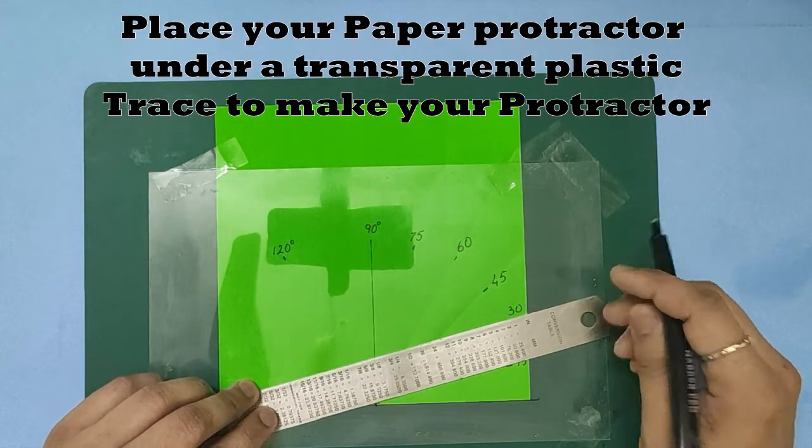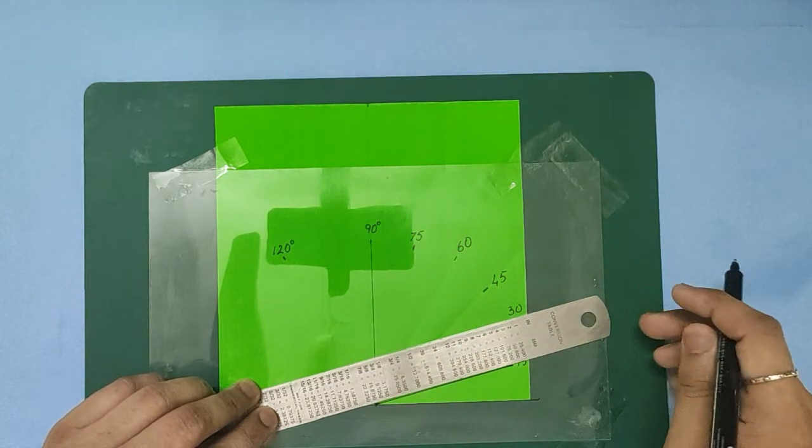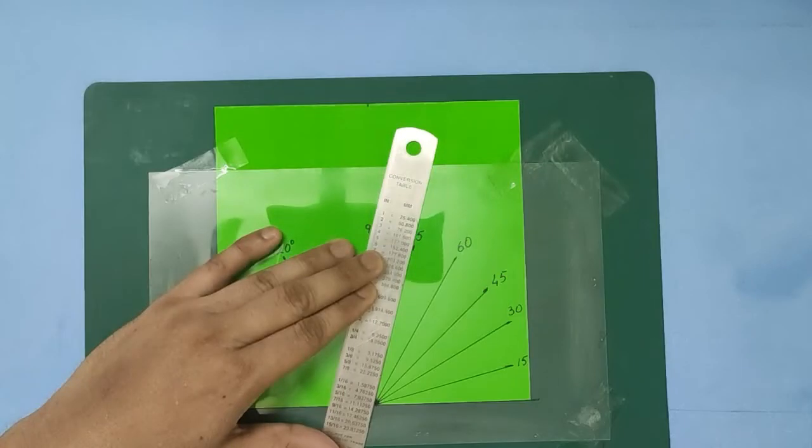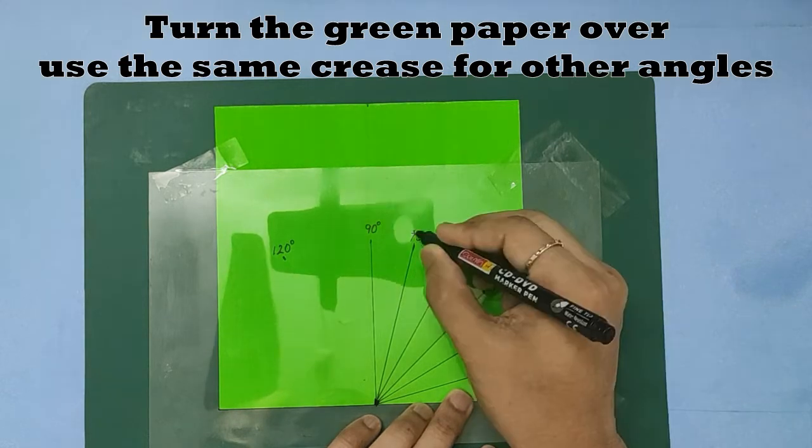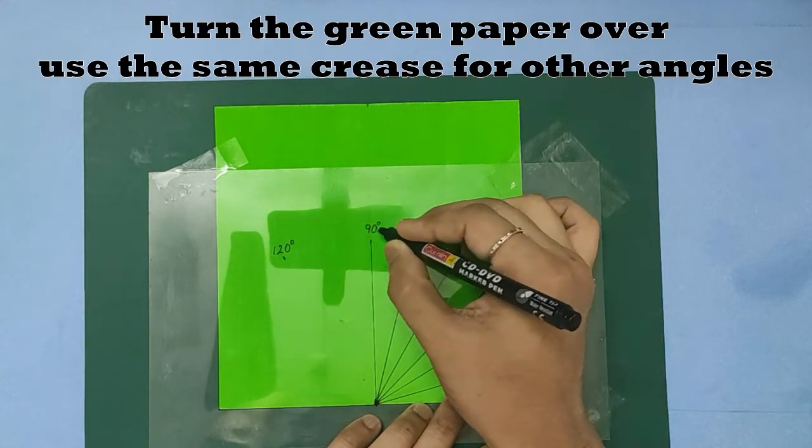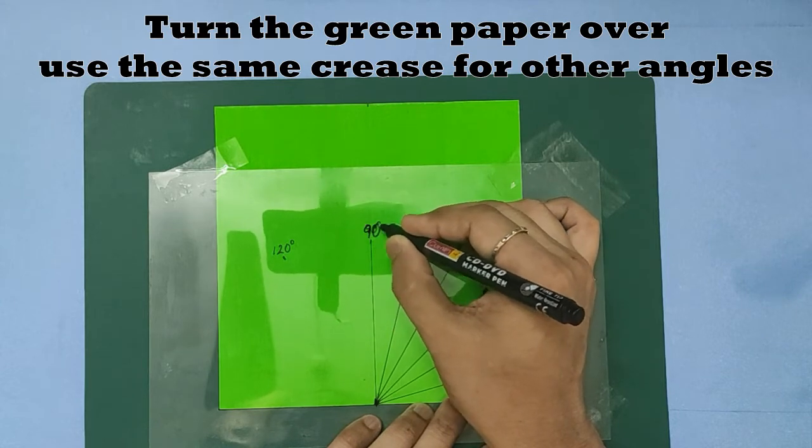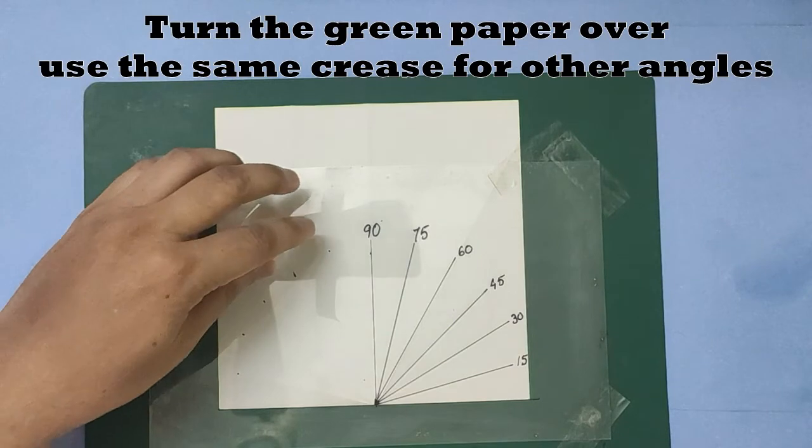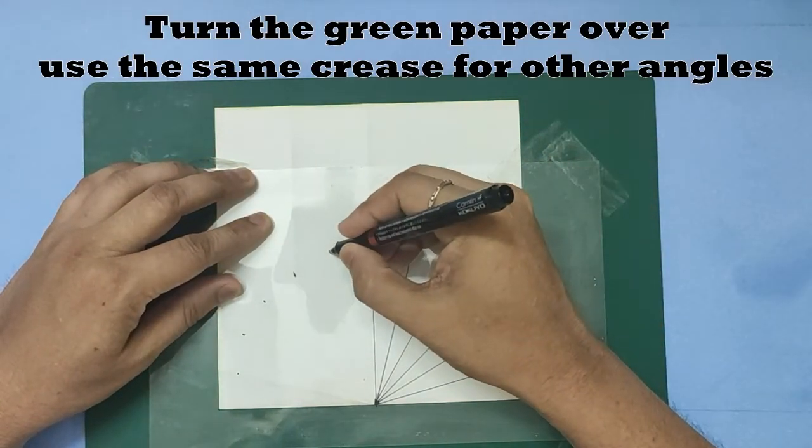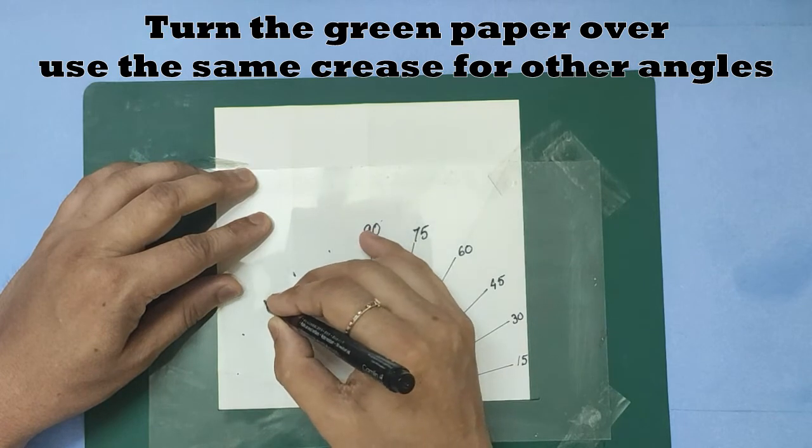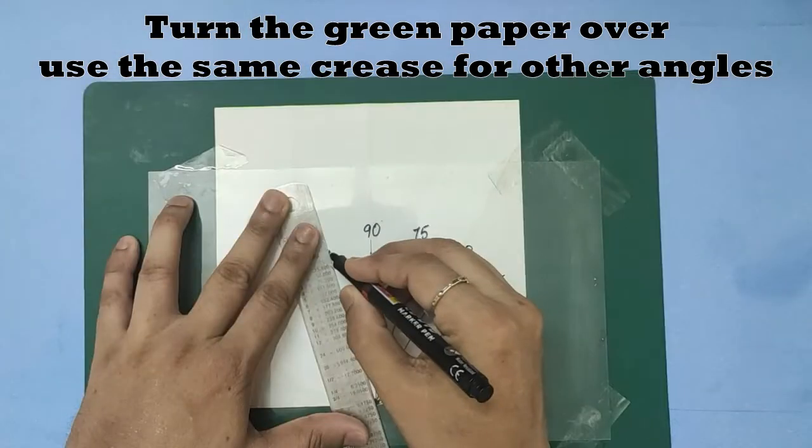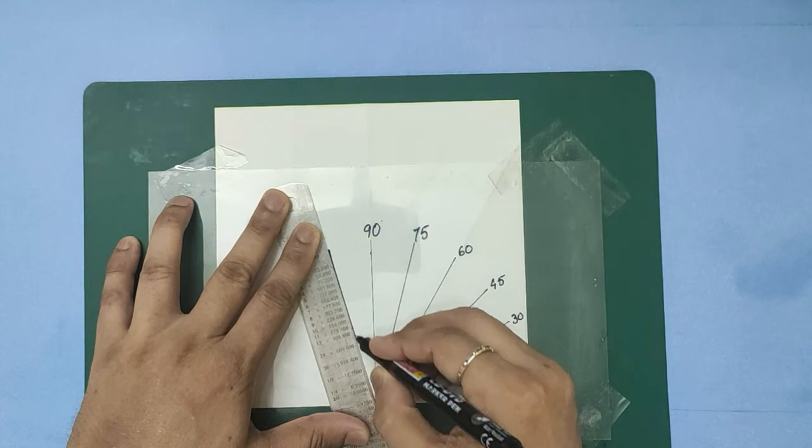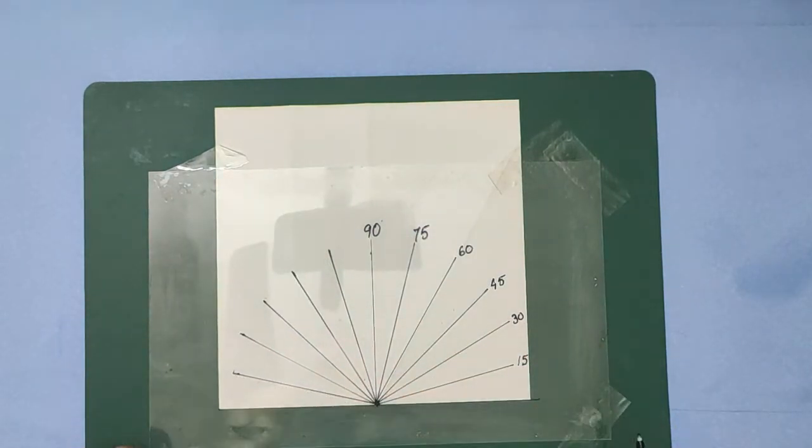Using a permanent marker, you turn the green paper over to get the other side. The creases are already there. Place it underneath and mark the other angles with a ruler. Draw the lines and mark them.